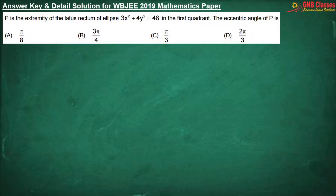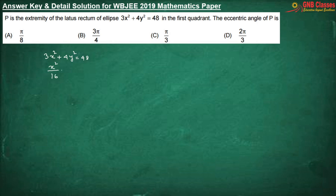In this question, P is the extremity of the latus rectum of the ellipse 3x² + 4y² = 48. Writing the ellipse in standard form, we get x²/16 + y²/12 = 1. Therefore, a² = 16 and b² = 12.